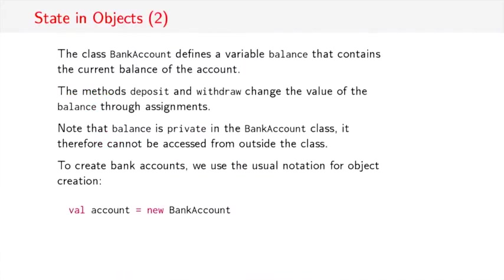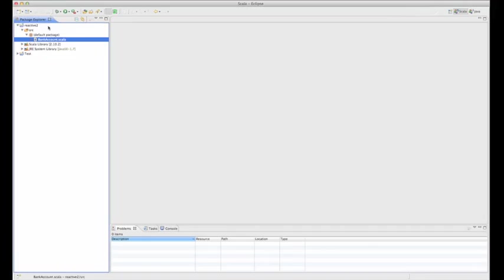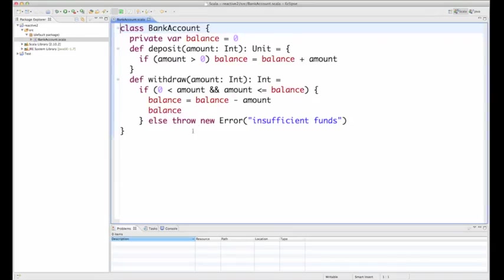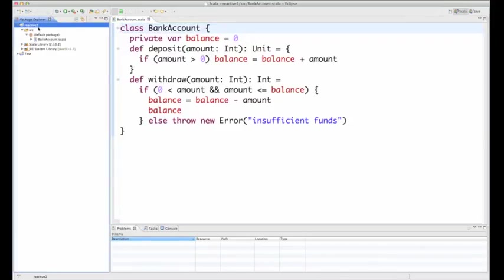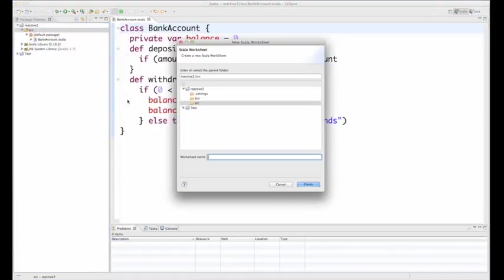So in summary, class bank account defines one private variable balance and two methods that can be used to change that variable. To create bank accounts, we use the usual notation for object creation. So you would write val account equals new bank account. And that would give you a new account. So let's try out some of these concepts using a worksheet in the Scala IDE. What I've done is I've defined a project reactive 2 for the second week of the reactive course. And in there, I have defined the class bank account like you saw it on the slide.